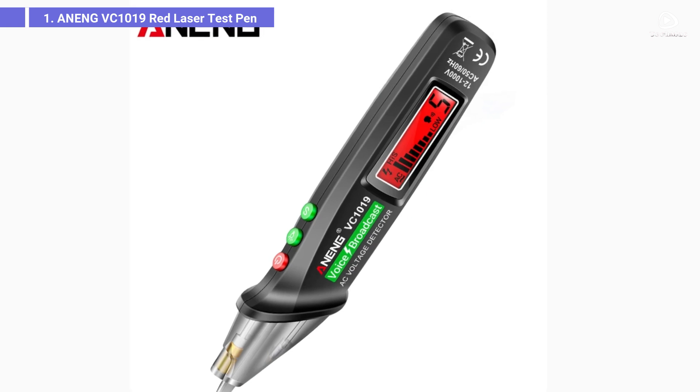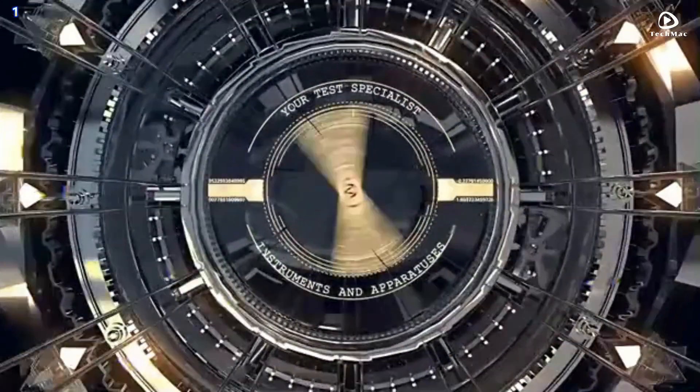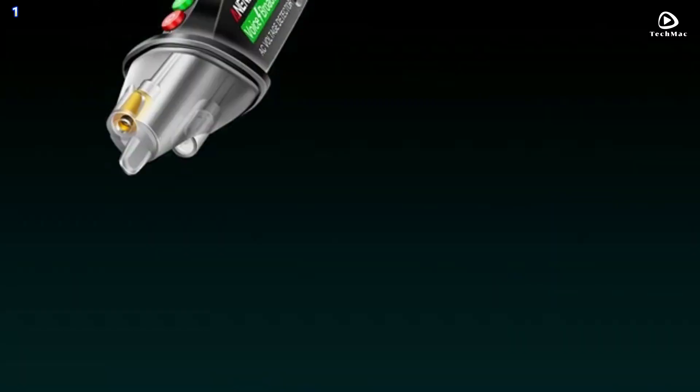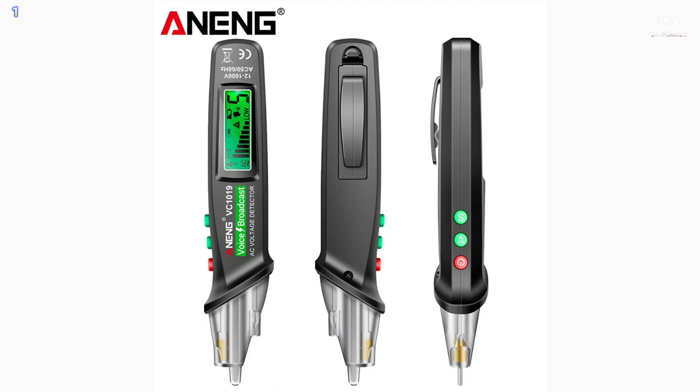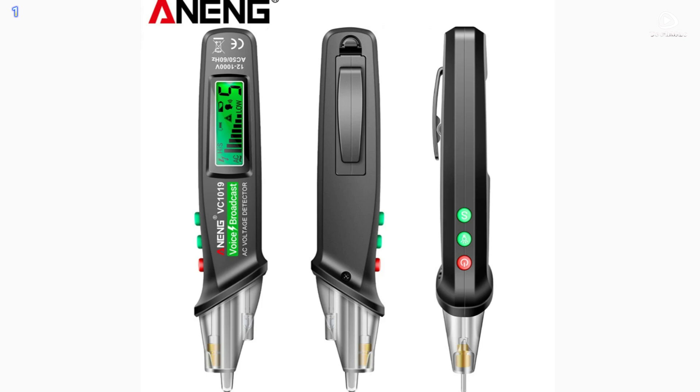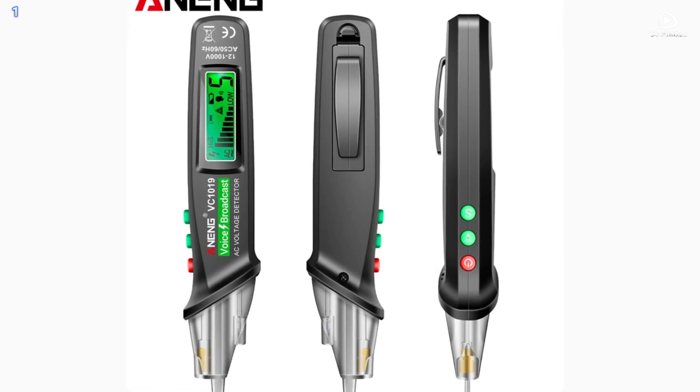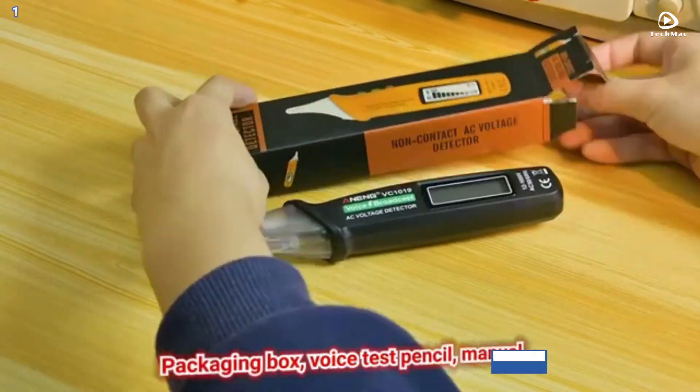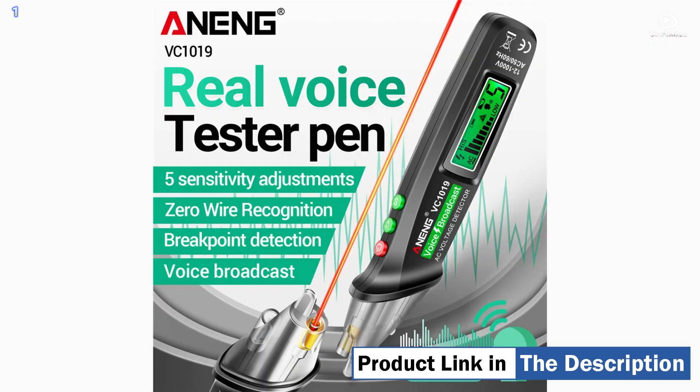Number 1: Anning VC1019 Red Laser Test Pen. The Anning VC1019 tester is more than just a typical multimeter. It's a compact, versatile, and incredibly accurate tool that fits right in your hand. But don't let its size fool you, this tester is packed with features.